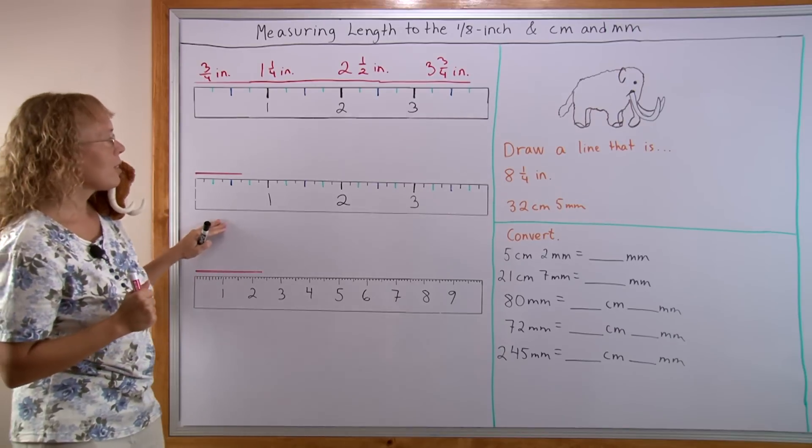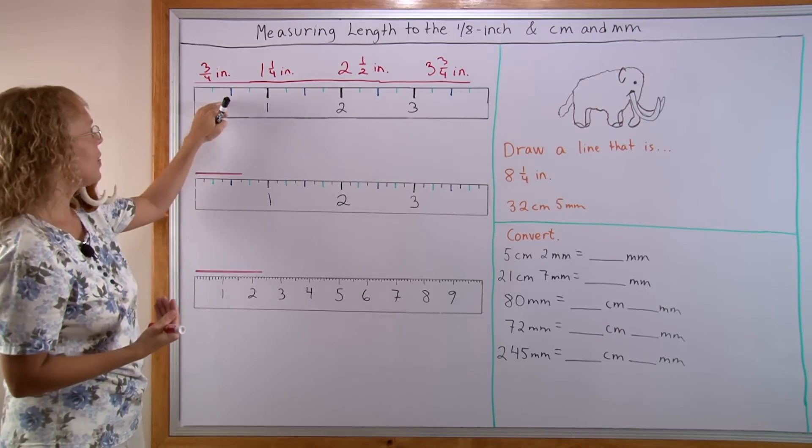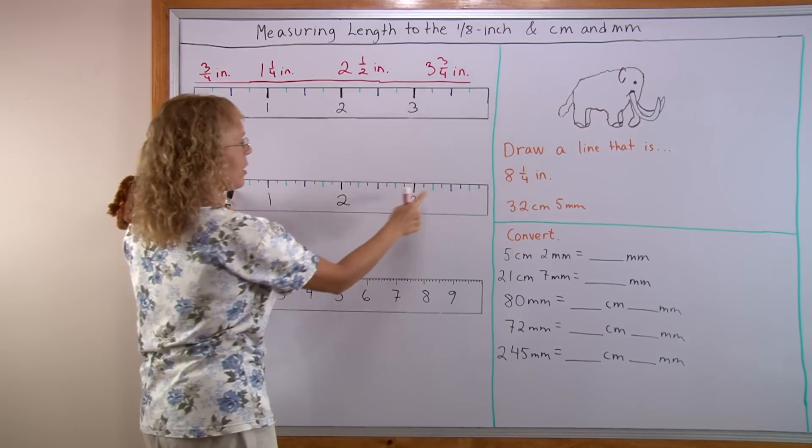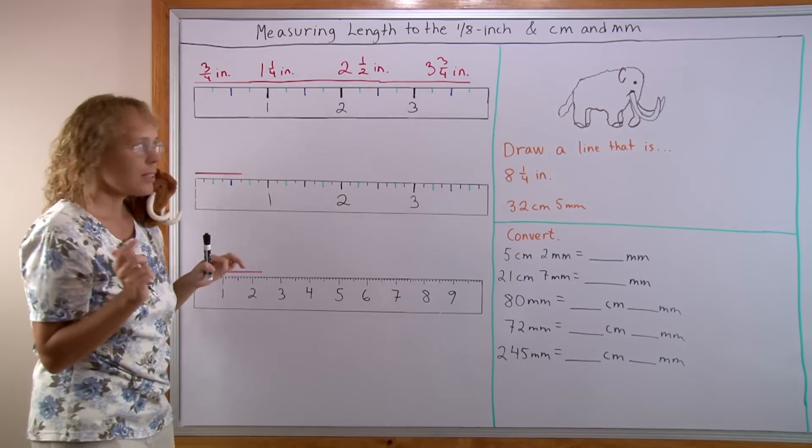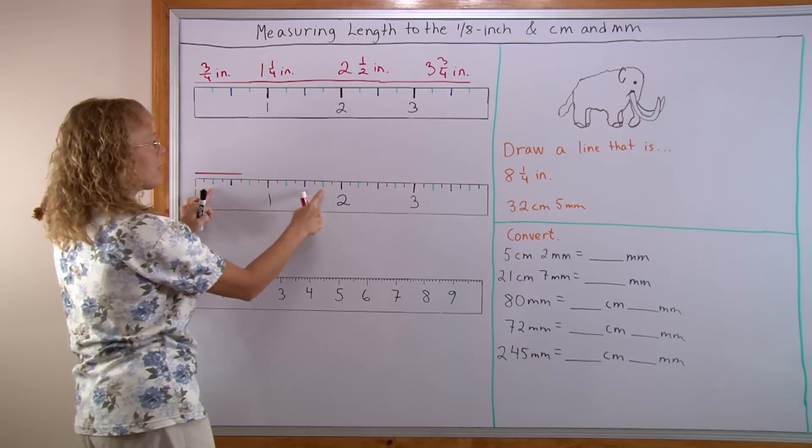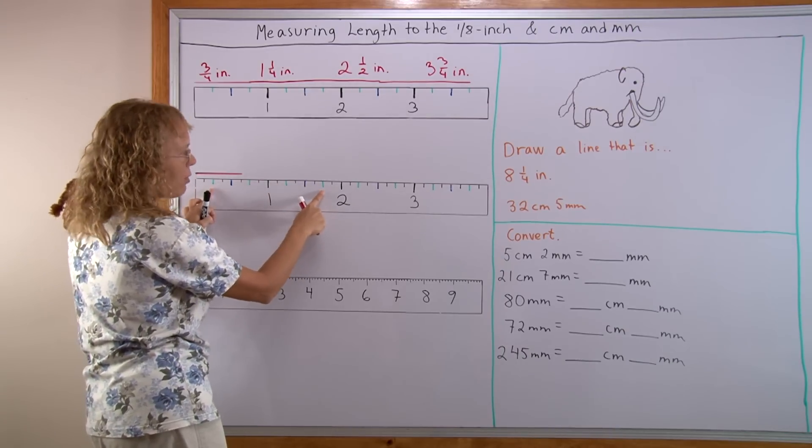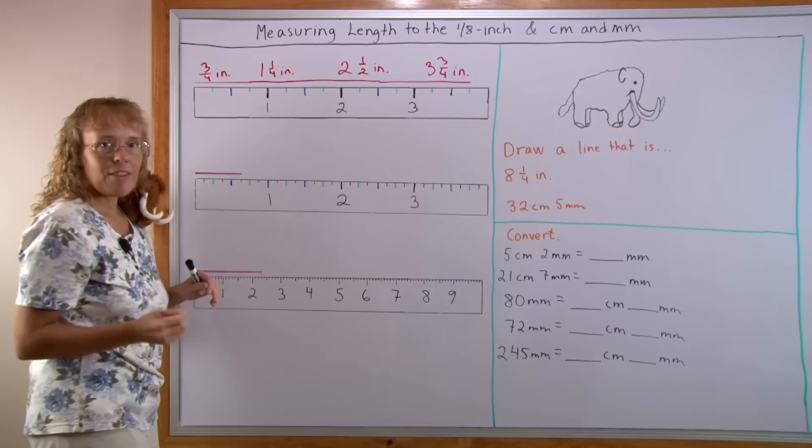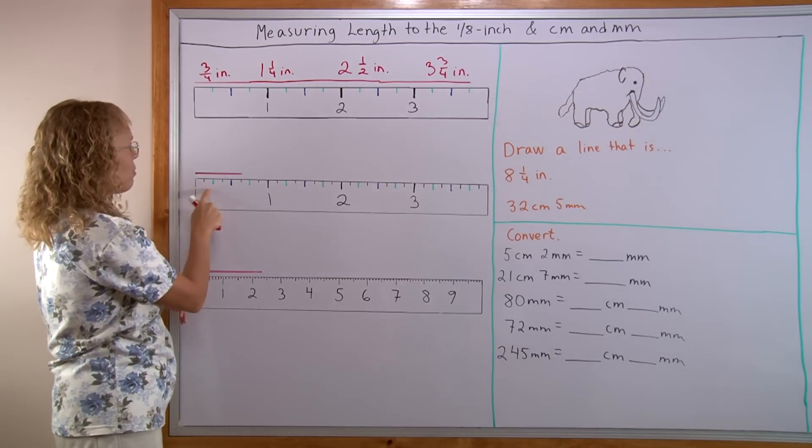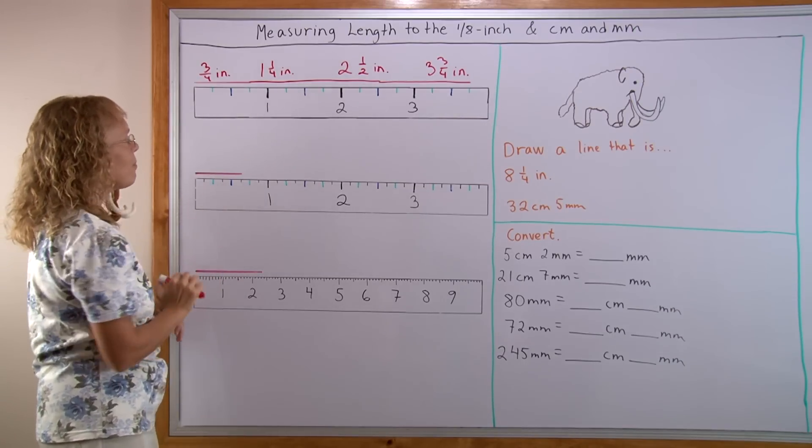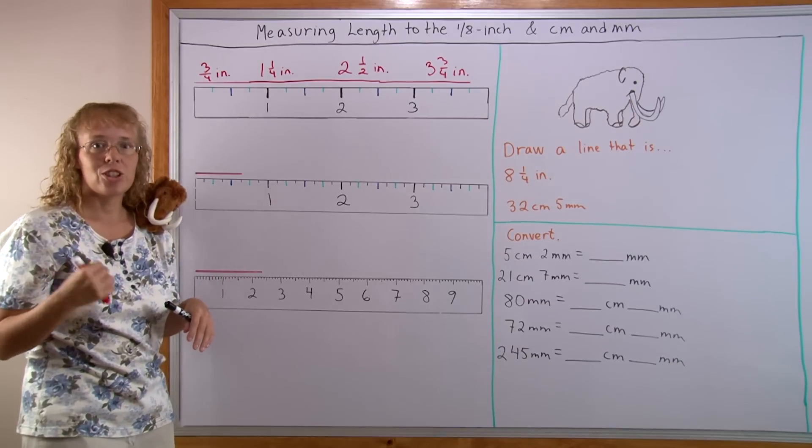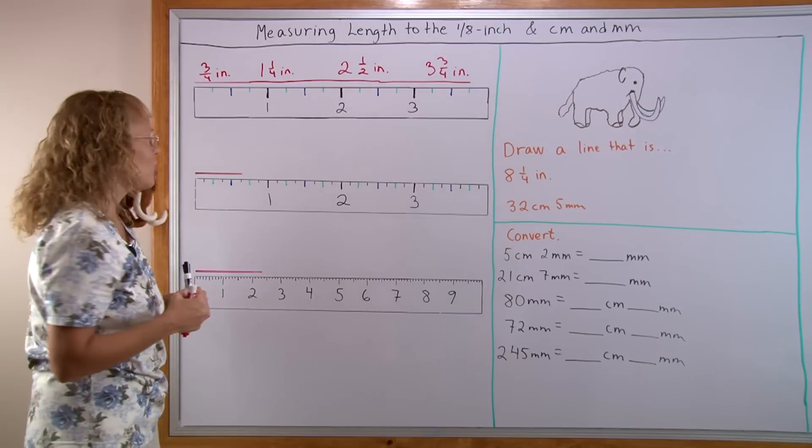Now in this ruler we have the same marks as here. The blue marks are the 1/2 inch marks and then the green ones are the 1/4 inch marks. And then I've added one tick mark in between each that was there. Now we have a ruler that measures to the nearest 1/8 inch.